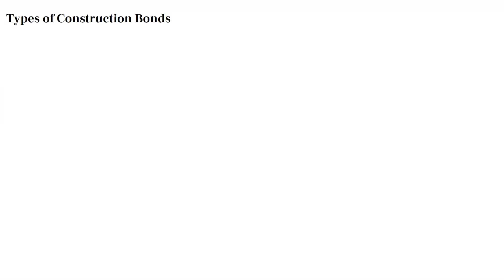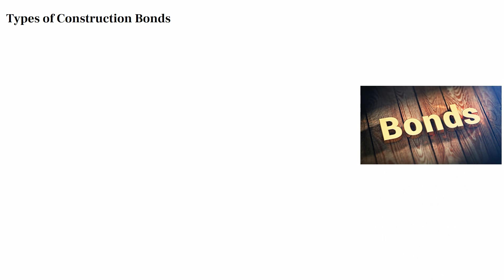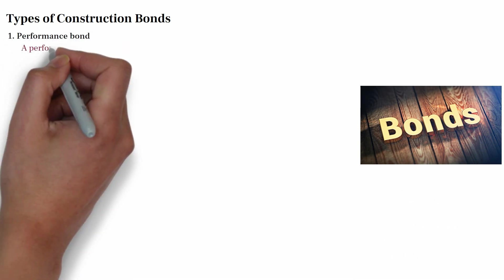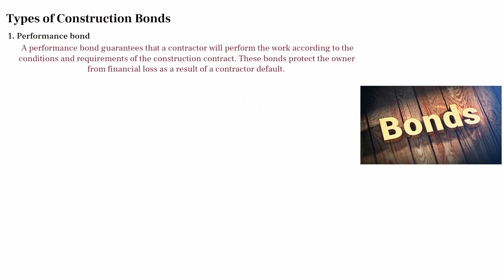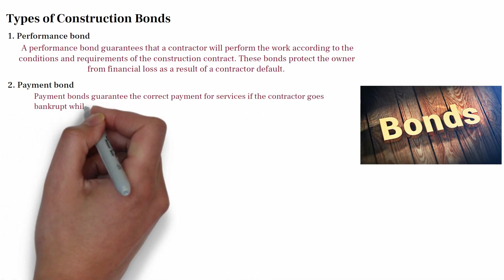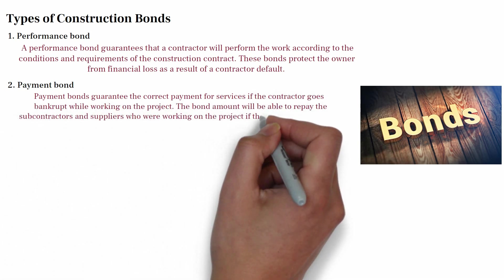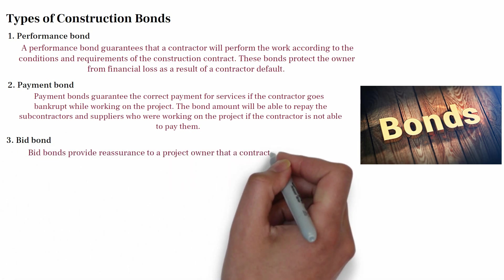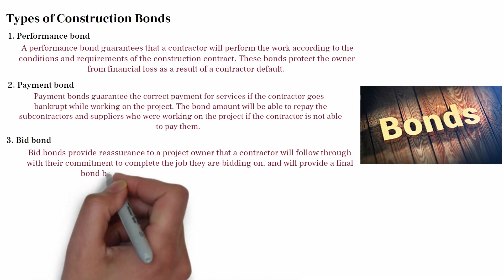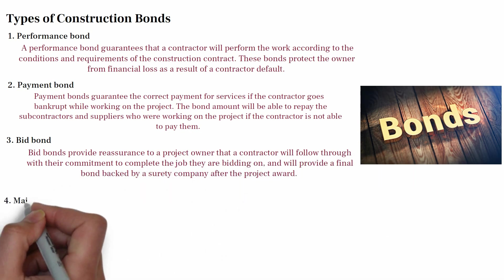Types of construction bond. One: Performance bond — this guarantees that the contractor will perform the work according to the conditions and requirements of the construction contract, protecting the owner from financial loss as a result of contractor default. Two: Payment bond — this guarantees correct payment for services if the contractor goes bankrupt while working on the project; the bond amount repays the subcontractor and supplier if the contractor is unable to pay them. Three: Bid bond — this provides reassurance to a project owner that a contractor will follow through with their commitment to complete the job they are bidding on and will provide a final bond backed by a surety company after the project award.